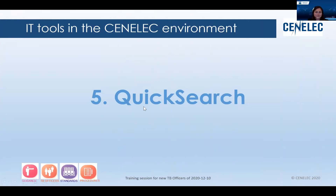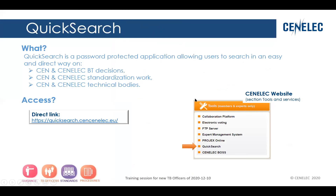It's me again. I will continue with the quick search, and this time I will share my screen because I will give you an online demo. About quick search: it is a web application that is also protected by a username and password, which gives you the possibility to search in an easy and direct way on the CEN and CENELEC BT decisions, on CEN and CENELEC standardization work, and on CEN and CENELEC technical bodies. You can access this tool via the direct link, and it is also accessible via the CEN and CENELEC website in the toolbox.